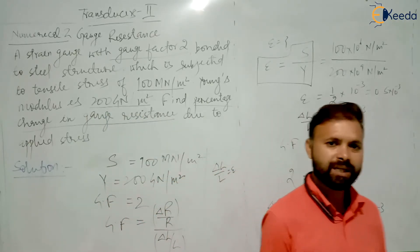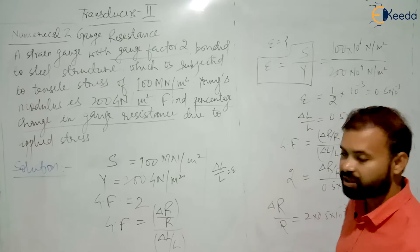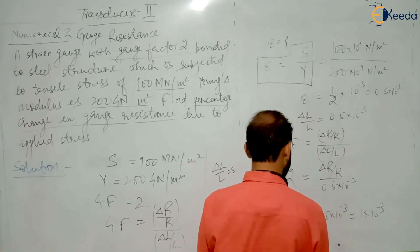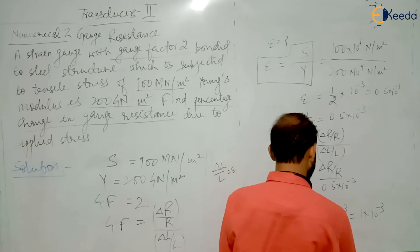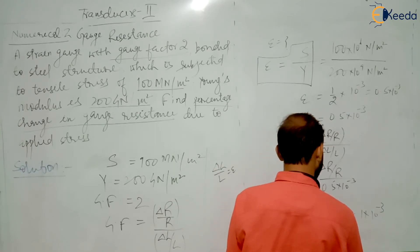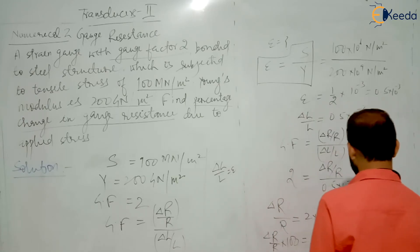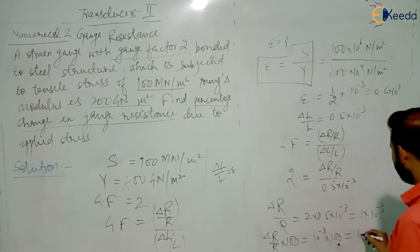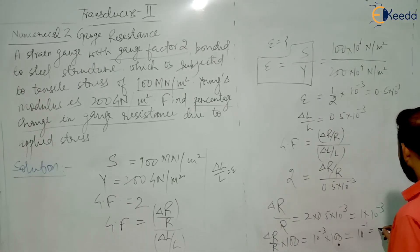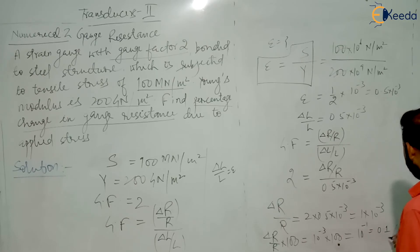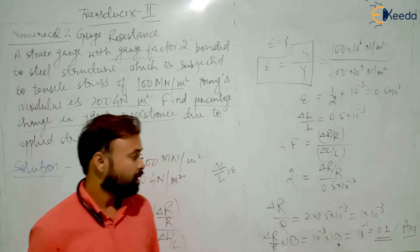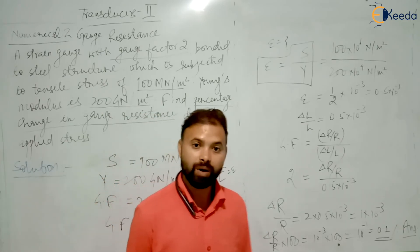Now you have to calculate percentage change in resistance, so just multiply this quantity by 100. Delta R by R into 100 will be equal to 10 to the power minus 3 into 100, which is 10 to the power minus 3 into 10 to the power 2, giving 10 to the power minus 1. This is 0.1 percent. So your answer in this question is 0.1 percent.